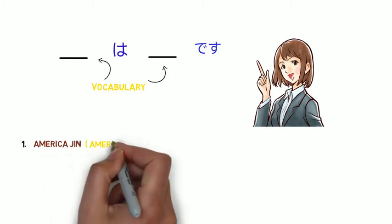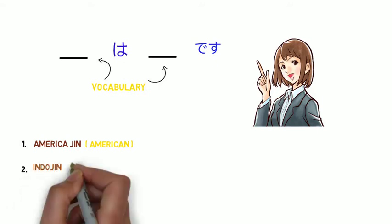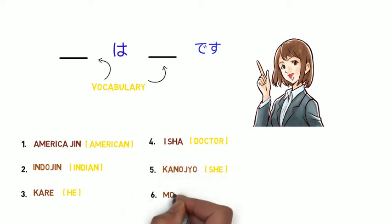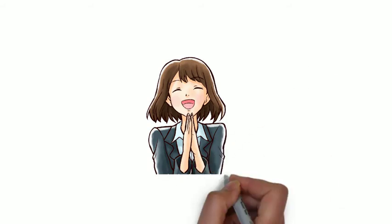American, Indian, he, cat, water, ramen. Now, we can use this vocabulary to make sentences.